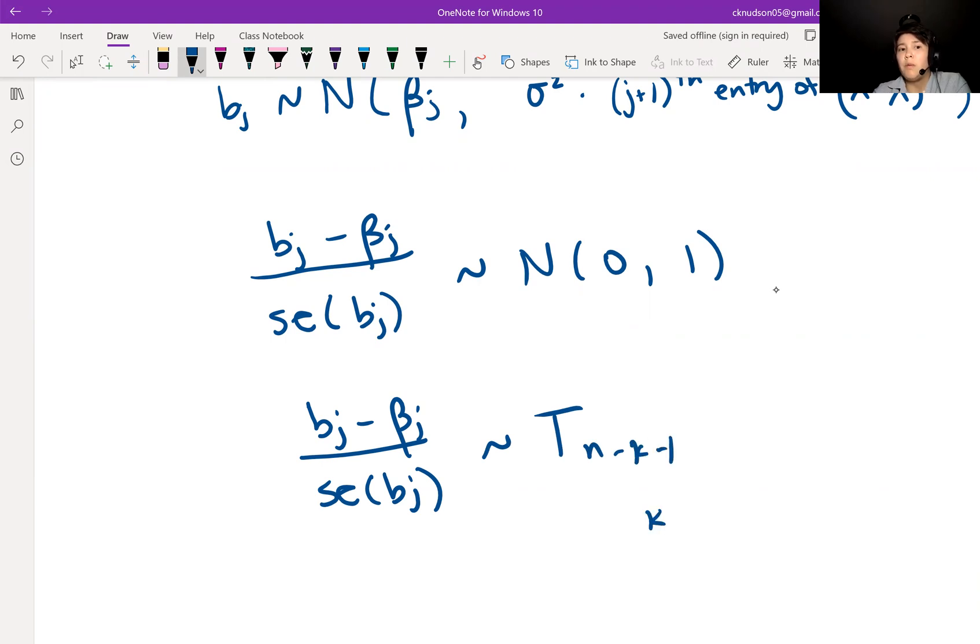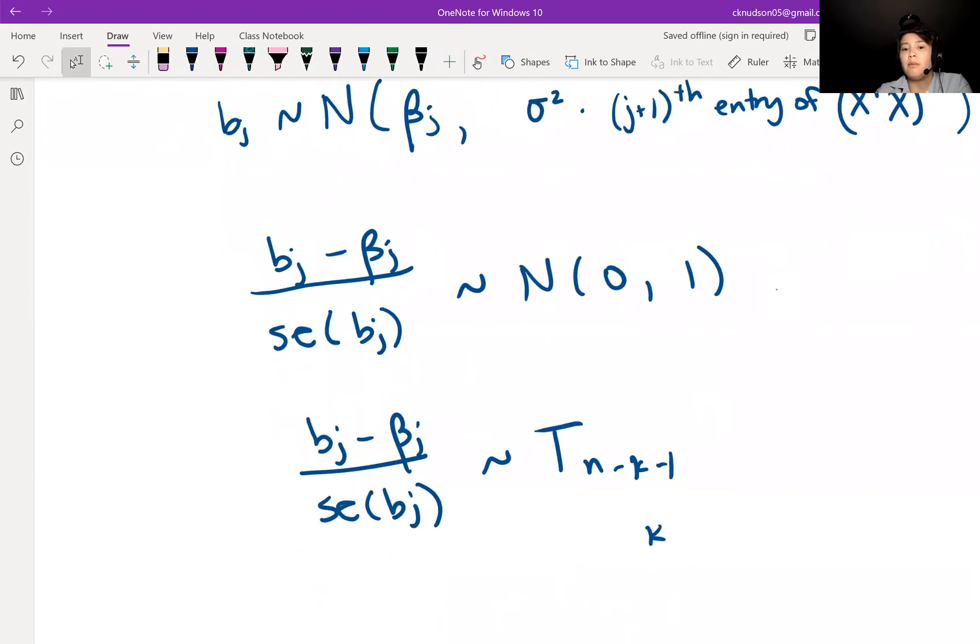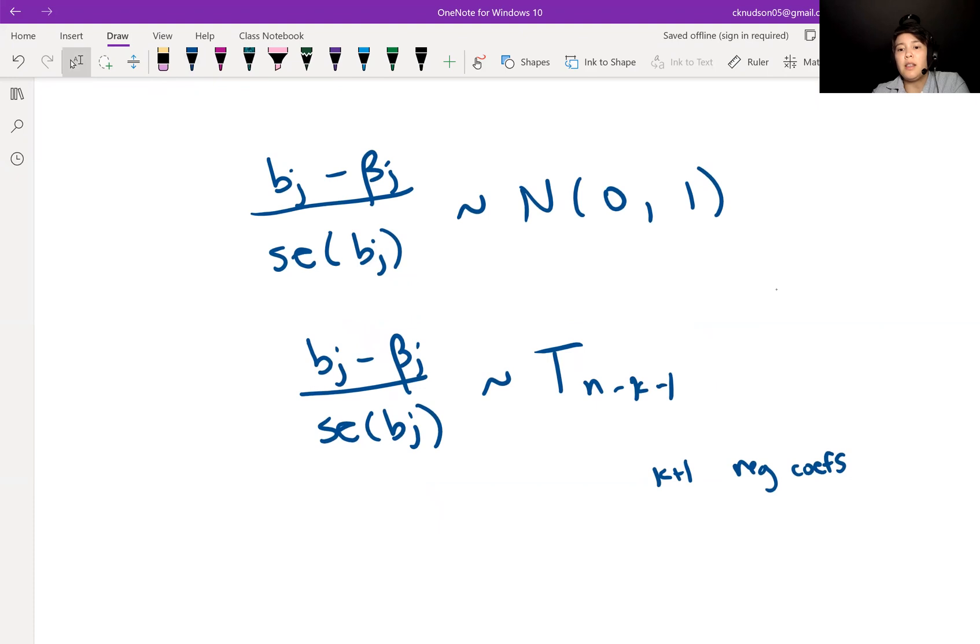The length of beta is K plus one, so we have K plus one regression coefficients.